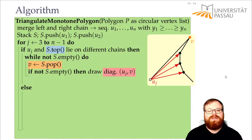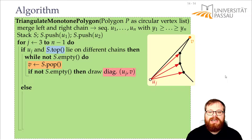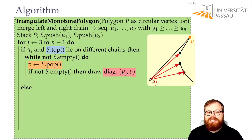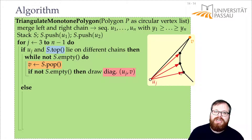Now we need to reinitialize the stack to create our new polygon. We push onto the stack uj-1 (the previous vertex) and then uj (the current vertex), and continue.